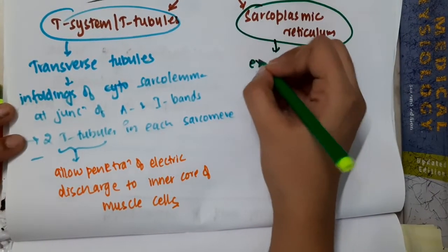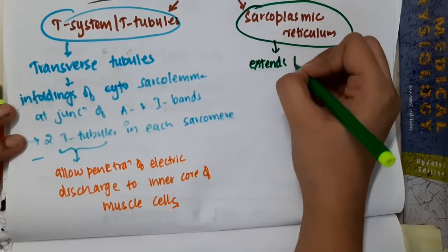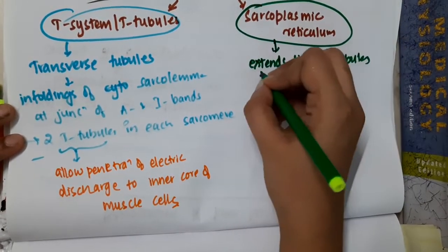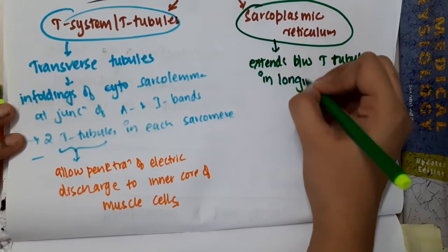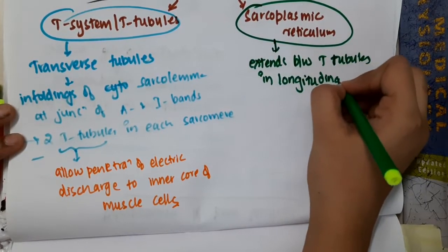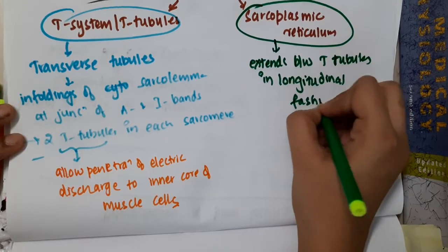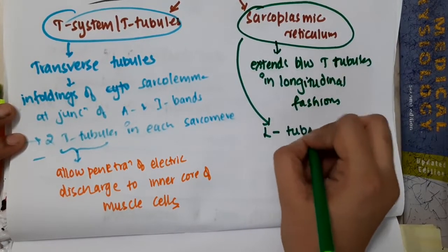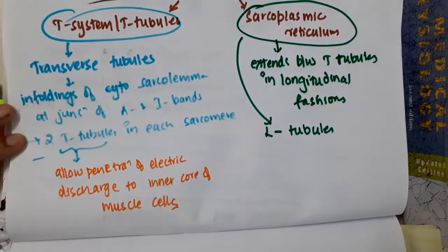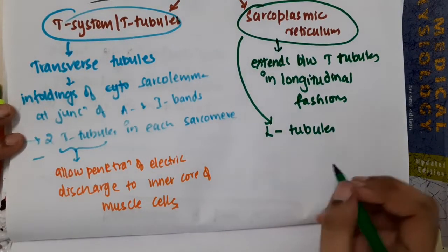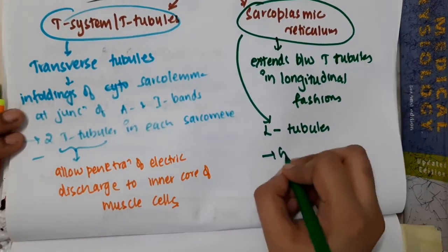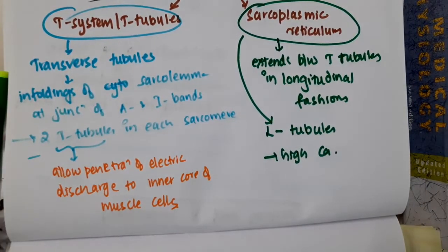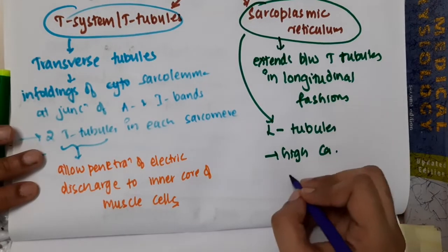The sarcoplasmic reticulum extends between the T-tubules in a longitudinal fashion, and therefore these are called L-tubules — L for longitudinal. These have high calcium content.